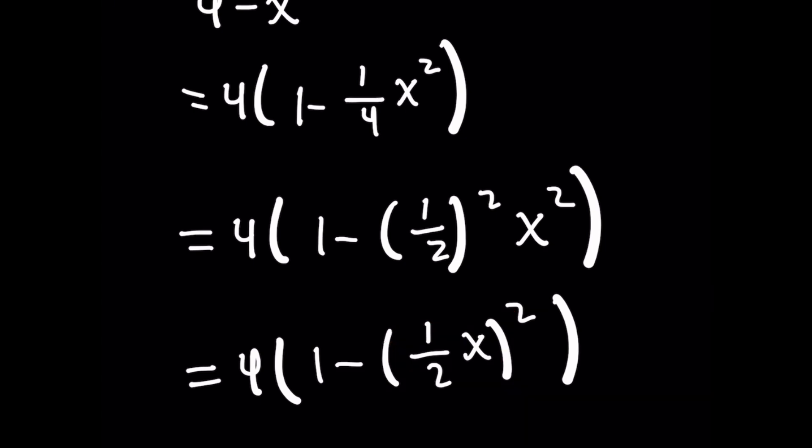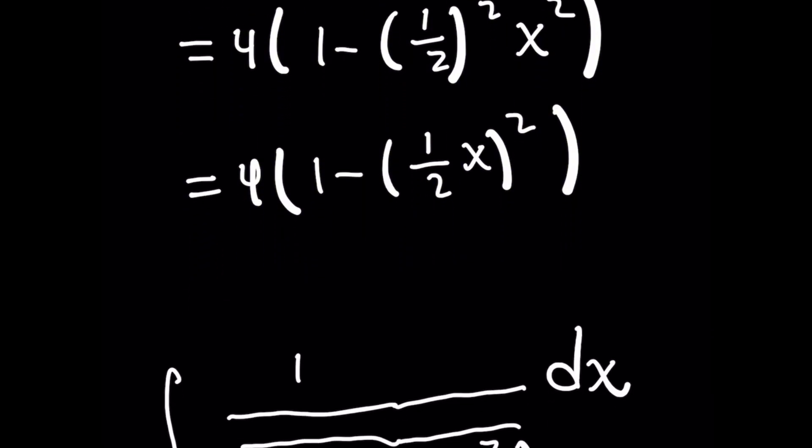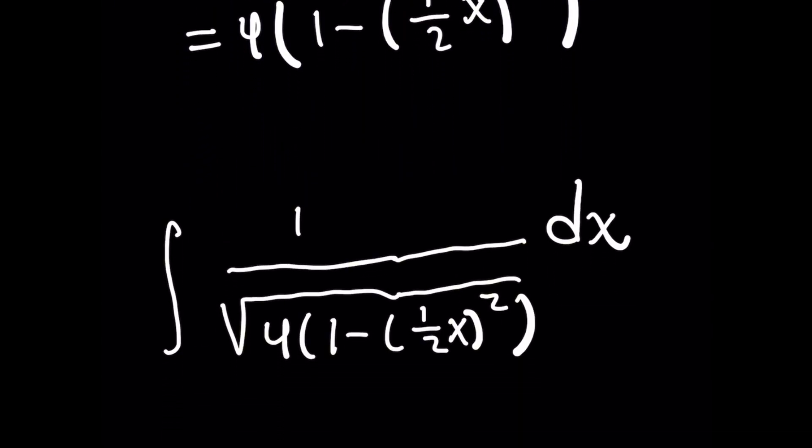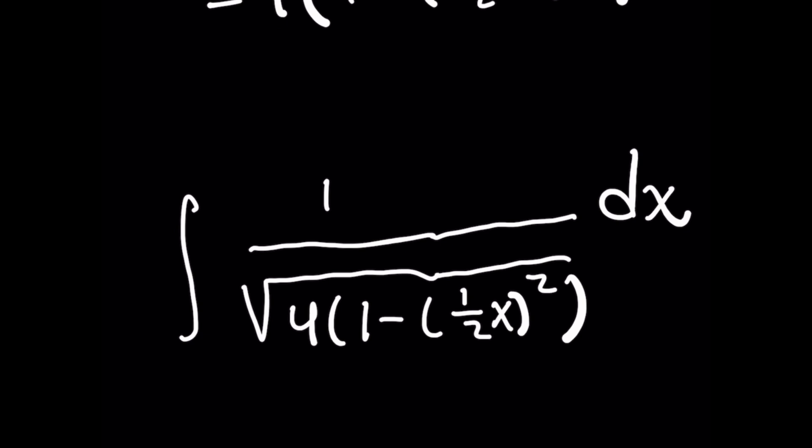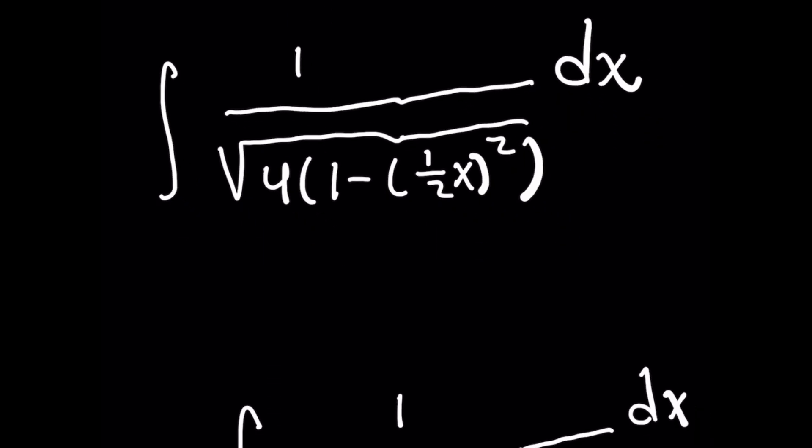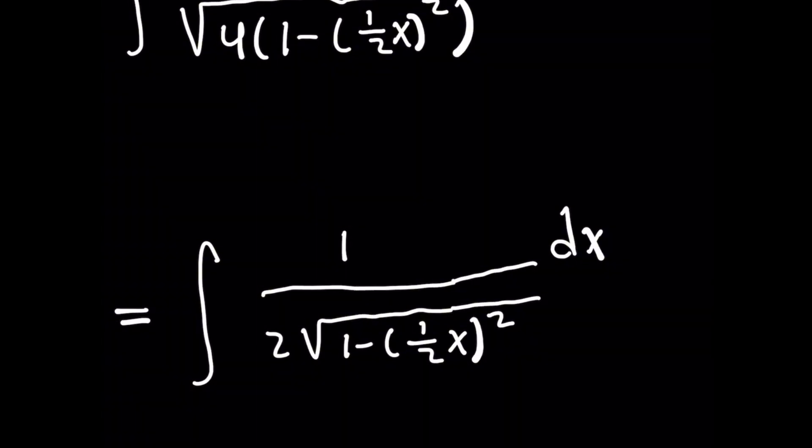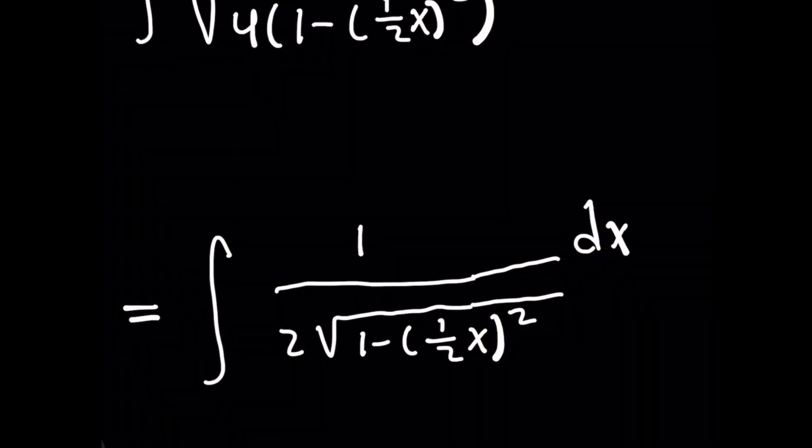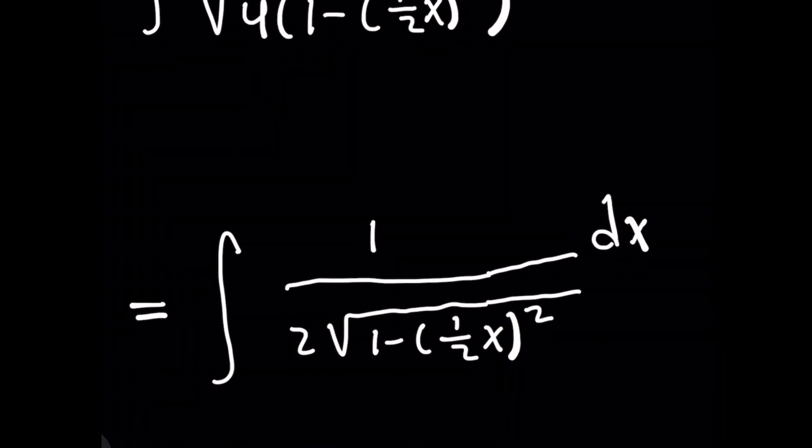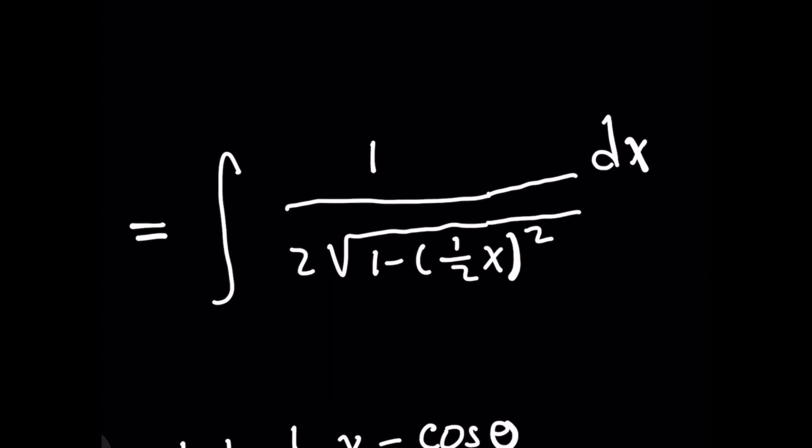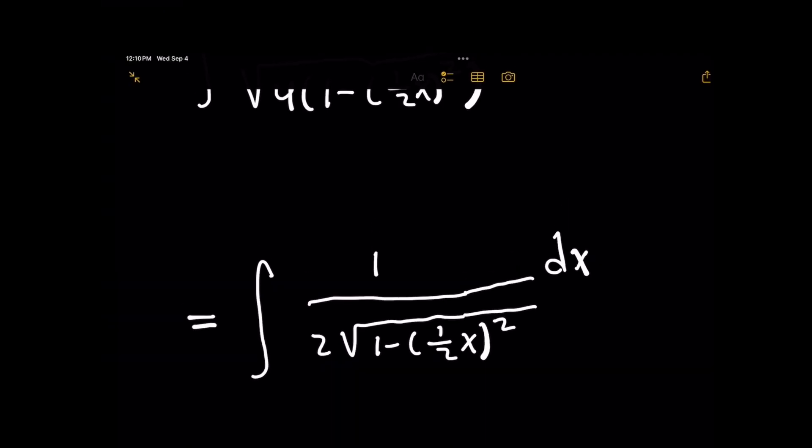the first thing I want to do is rewrite the expression by introducing the work we did above so that the denominator now becomes √[4(1 - ((1/2)x)²)]. When you take this a step further, remember that the square root of a constant times something is the same as taking the square root of that constant and bringing it out. The square root of 4 is 2, so I bring that out of the radical. Taking this a step further,